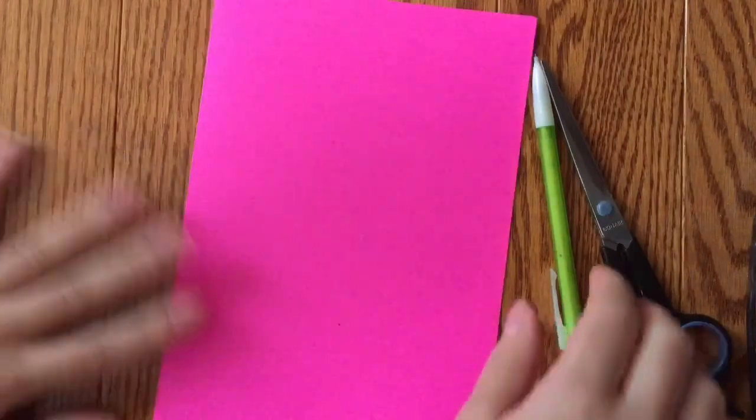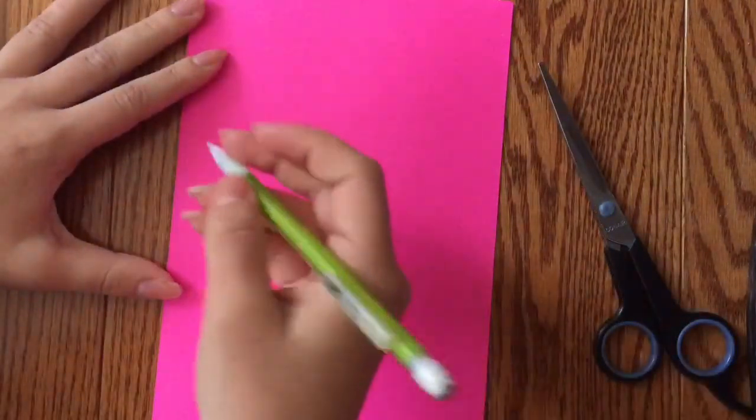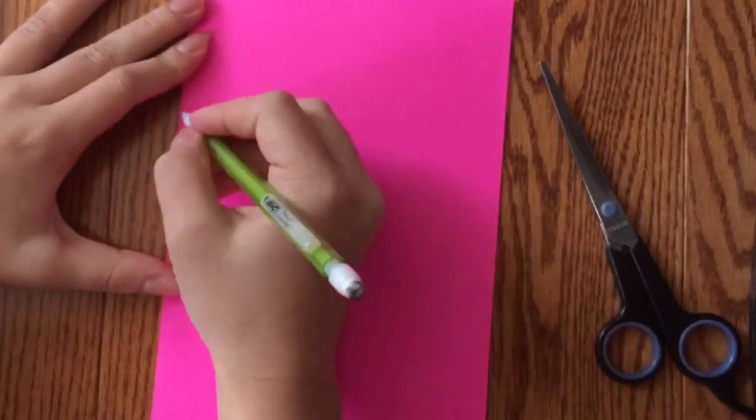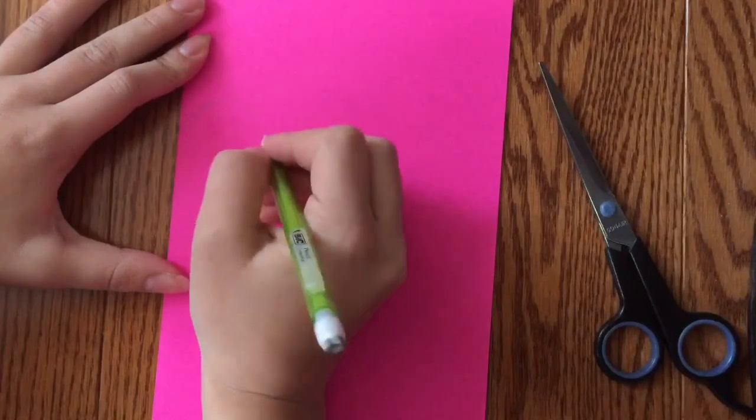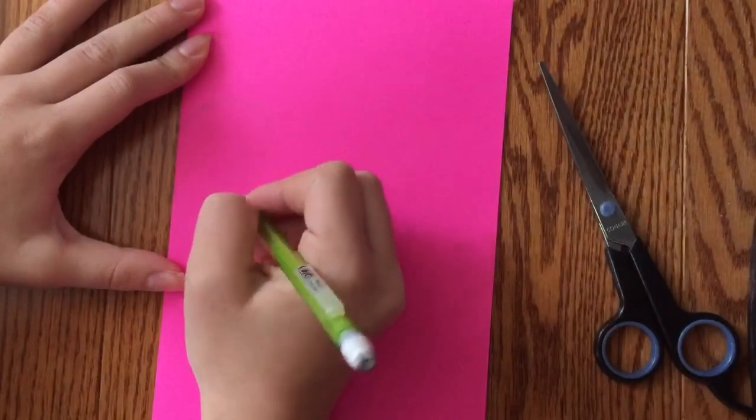Now we're going to trace lines with our pencil. I would highly advise to use an eraser so that you can erase lines and make your card neater. As you see here on the folded edge of the paper, we're going to draw half a heart.